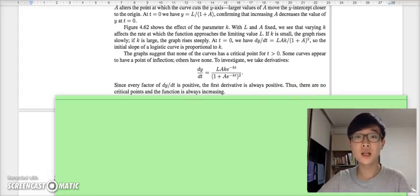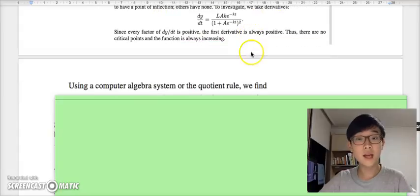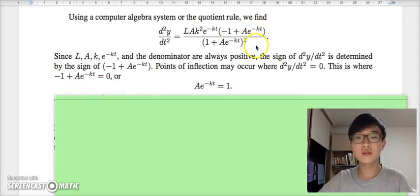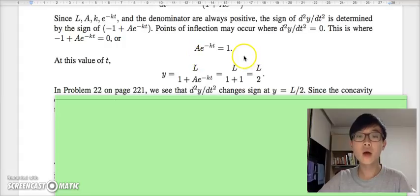What about the inflection points then? Things get a little more complicated. This is the second derivative, where both this and this always remain positive. Therefore, for inflection points to occur, this part has to equal 0. After some algebraic manipulation, we get that the inflection point occurs when the value of y equals L/2.